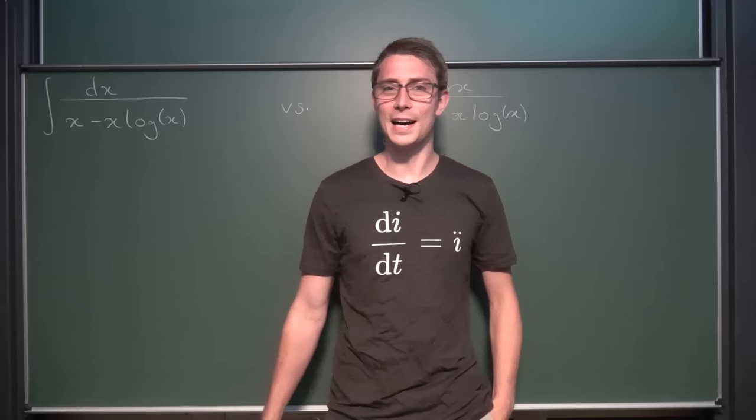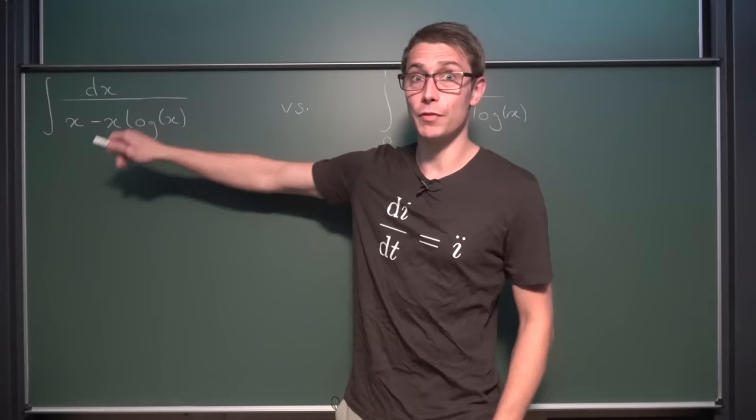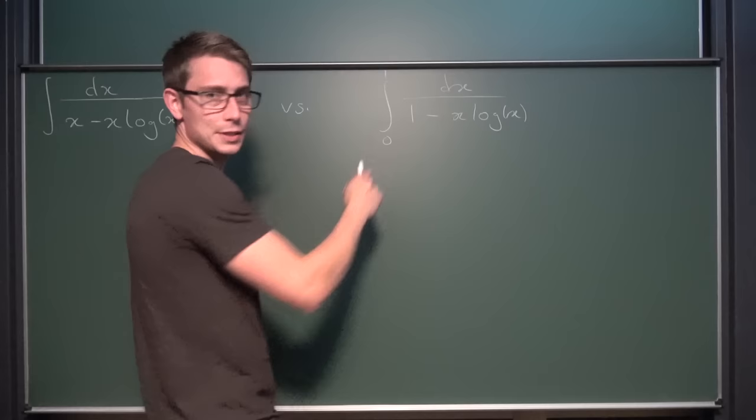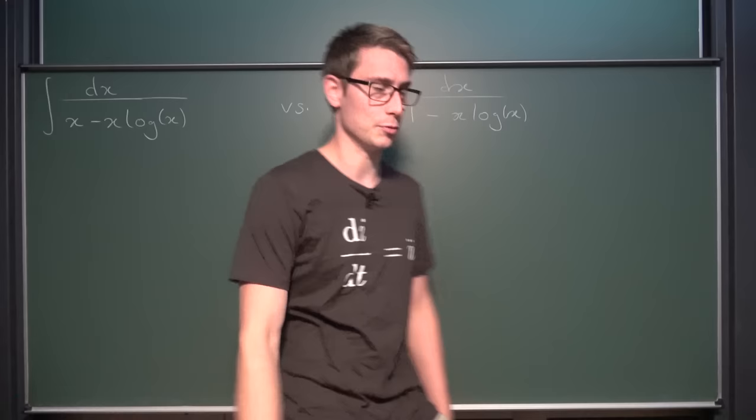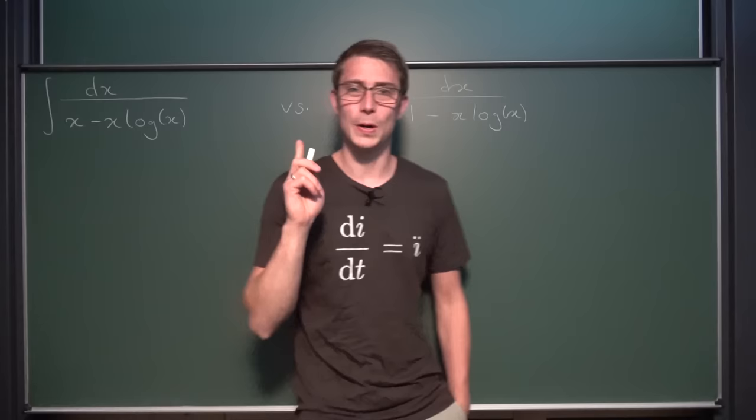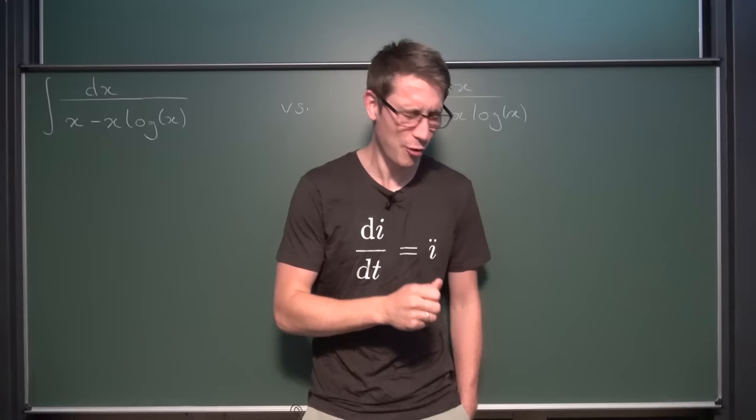Today an integral battle between 1 over x minus x·natural log of x, versus 1 over 1 minus x, natural log of x. Just a little difference in the x right here, but this makes a huge difference in the result. Please note this one doesn't have upper and lower bounds — we just search for the anti-derivative — and this one is from 0 to 1. Try it out and once you're done keep watching the video for the solution.